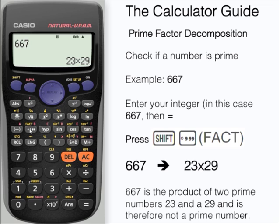The number has been displayed as 23 times 29, indicating that 667 is a product of those two numbers and is not prime.